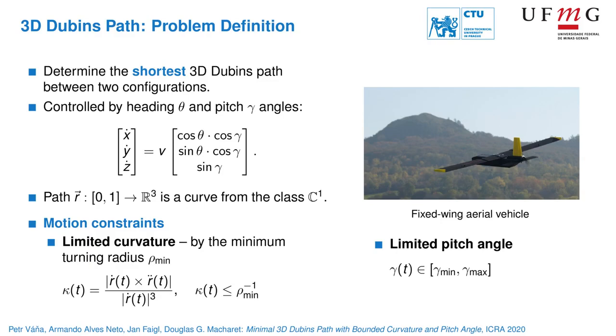The 2D version of this problem is often referred to as the Dubins path and there exists a solution based on closed-form expression that makes it computationally very effective. However, finding a 3D path is more challenging.